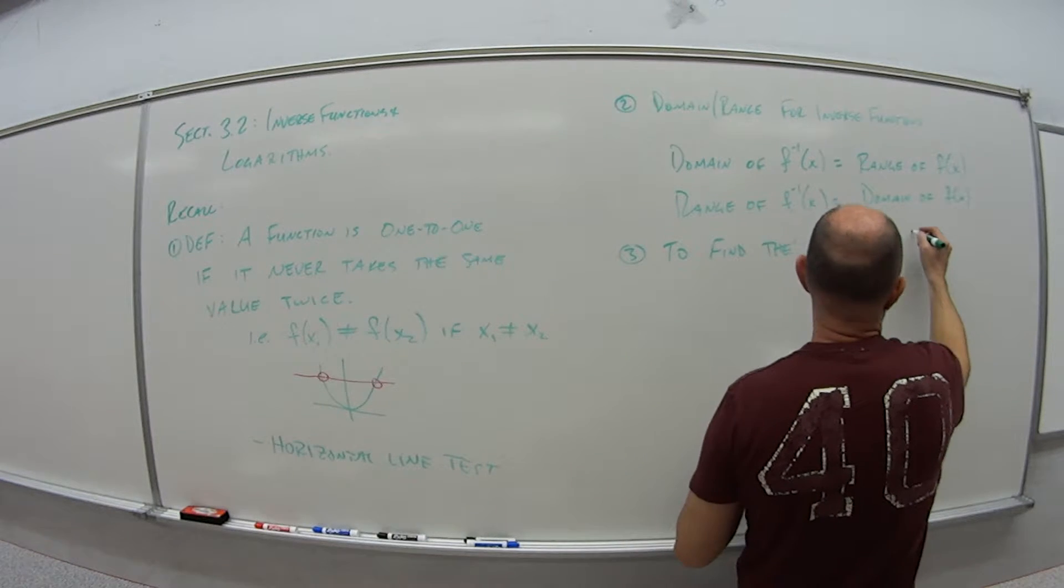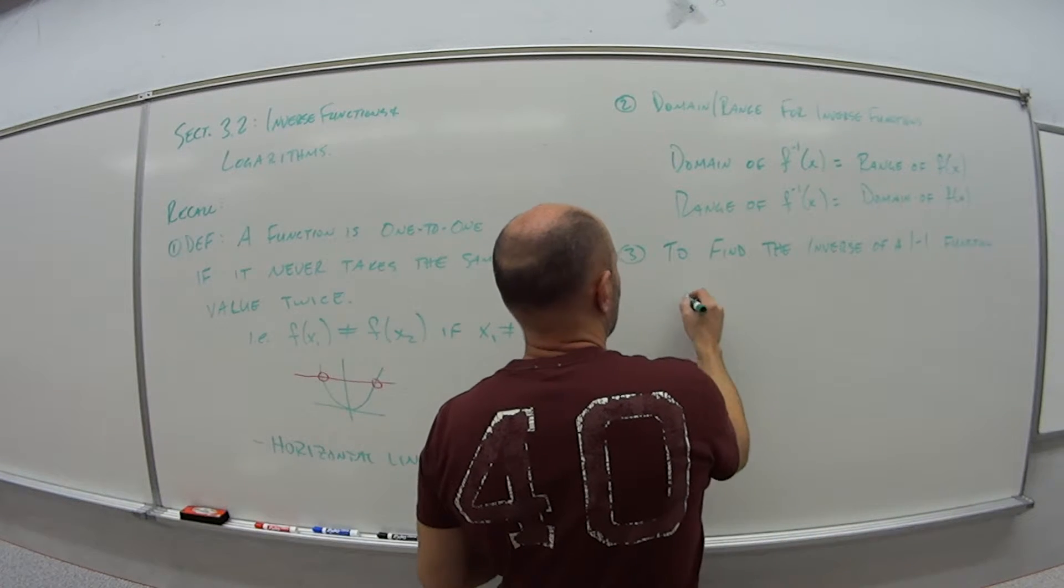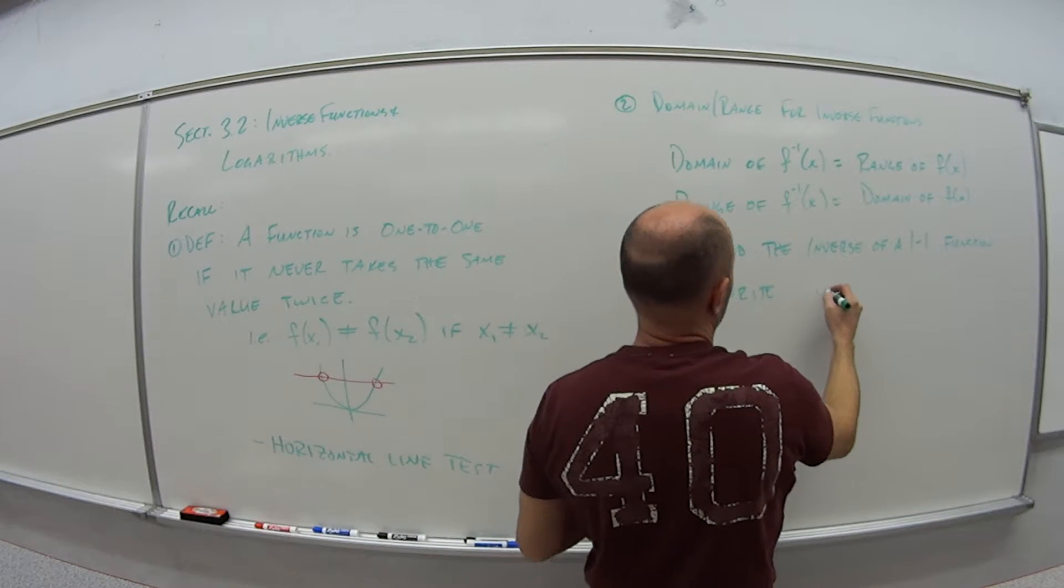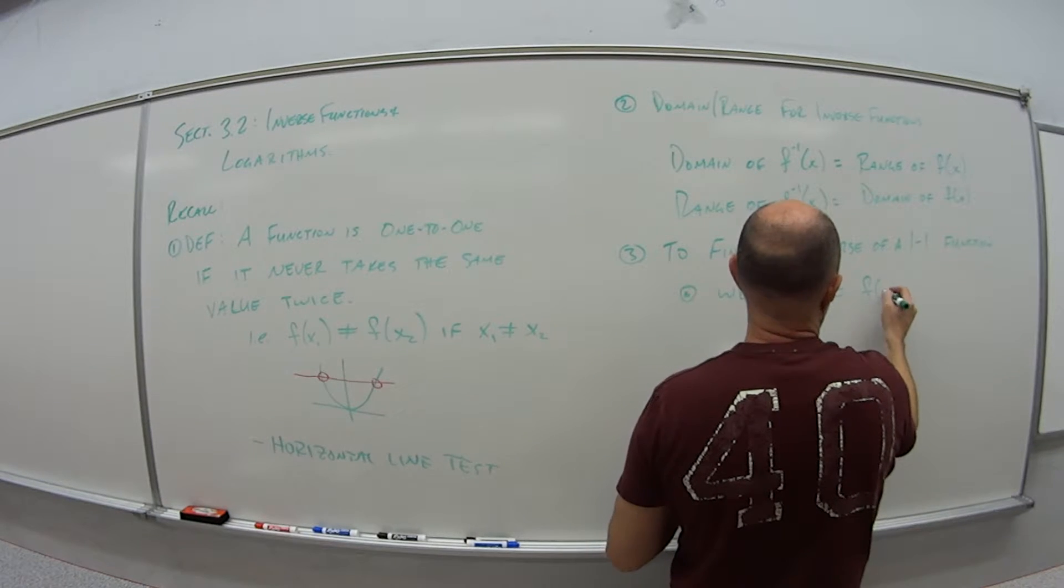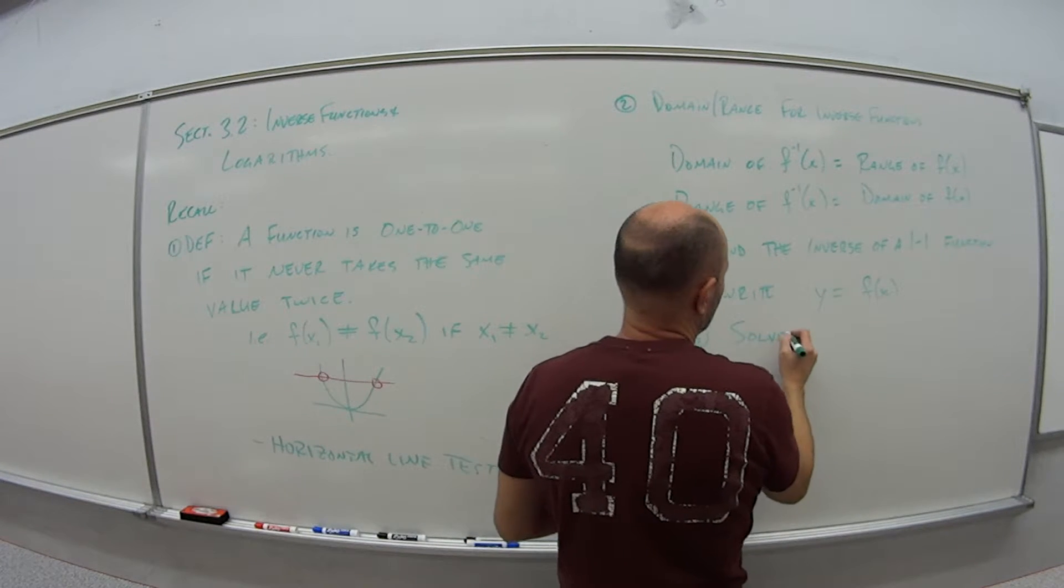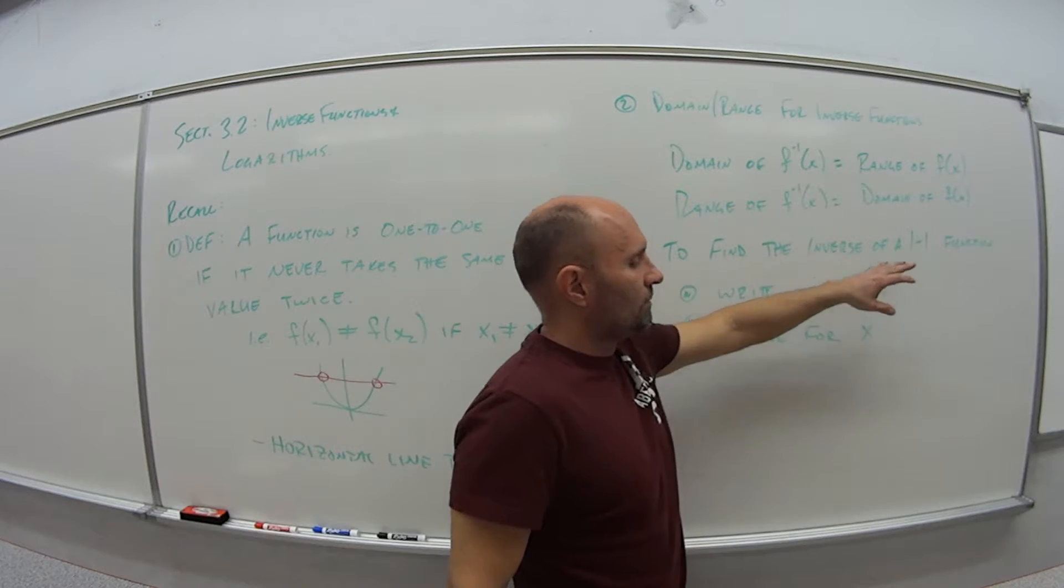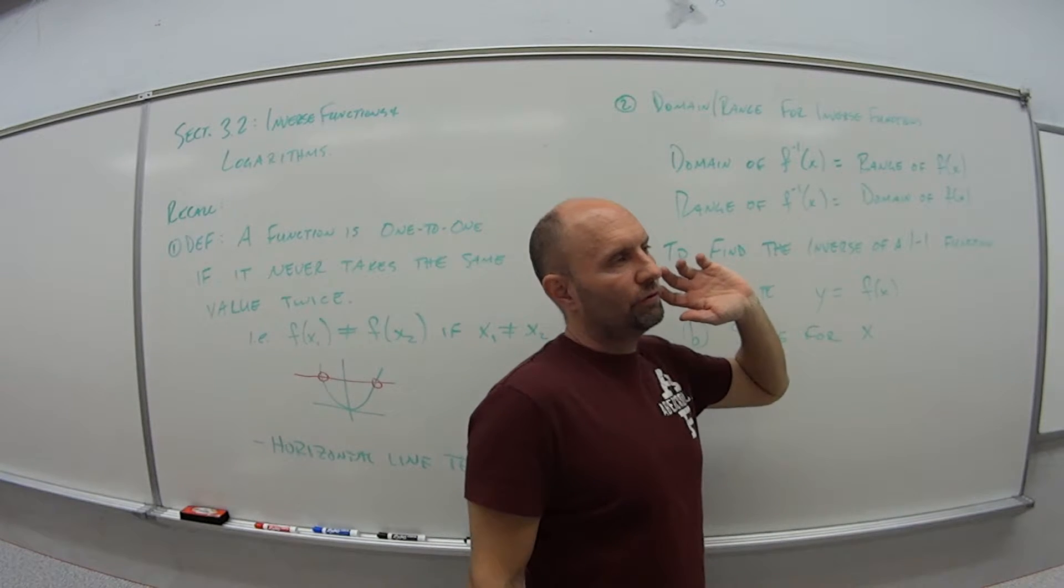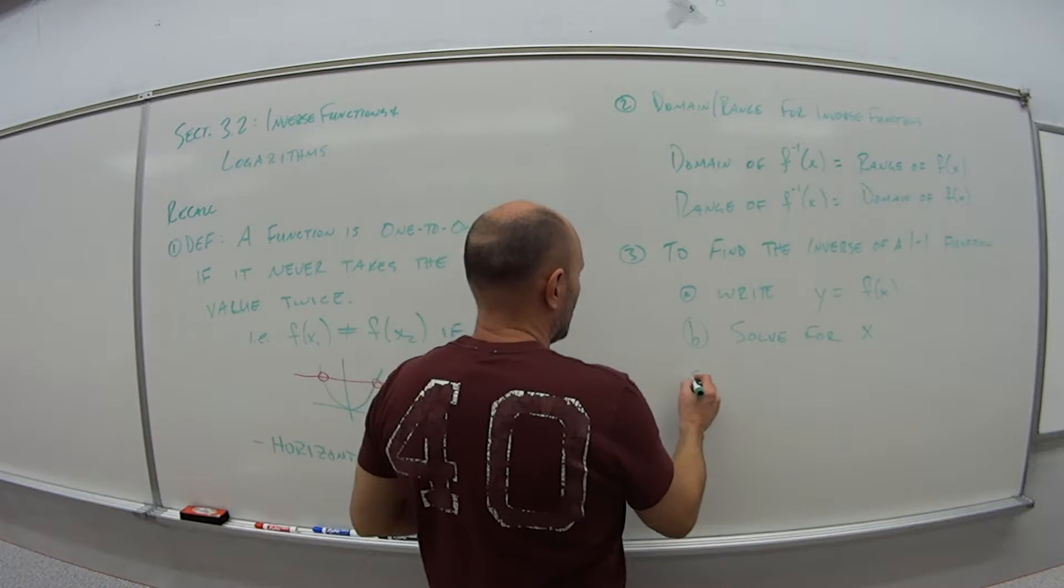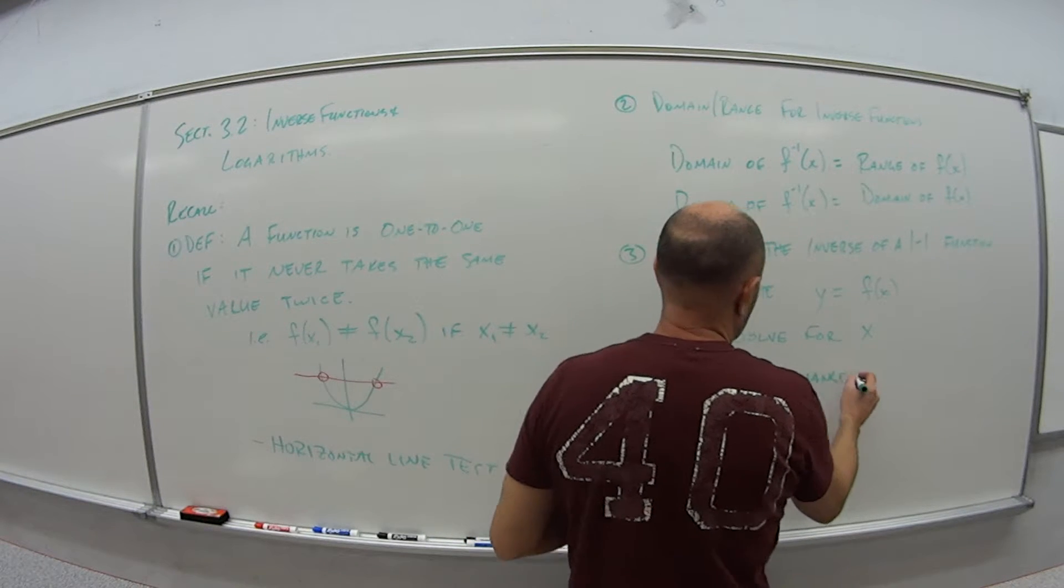Third, to find the inverse of a one to one function, we have the following steps. First, instead of writing f of x equals something, we write y equals whatever that function might be. Step two, we're going to solve for x. So maybe y equals x squared minus three. Once we have that, we solve for x, we get x by itself. And then once we do that, we interchange our x and y's.